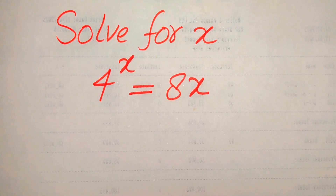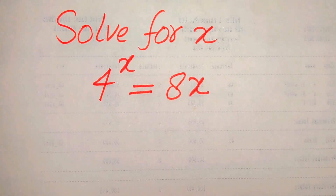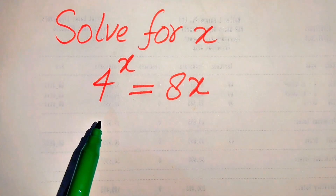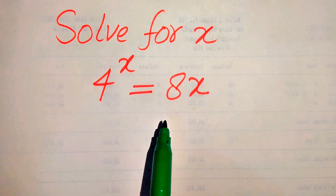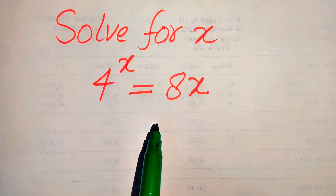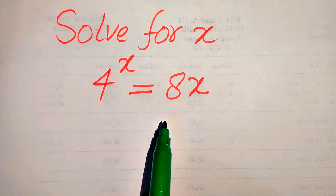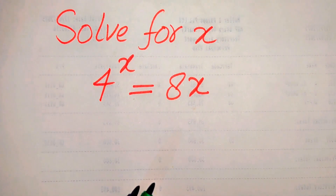Hello everyone. How to solve this problem for the values of x, if we have 4 to the power of x equals 8 times x? We will solve this problem for the values of x.